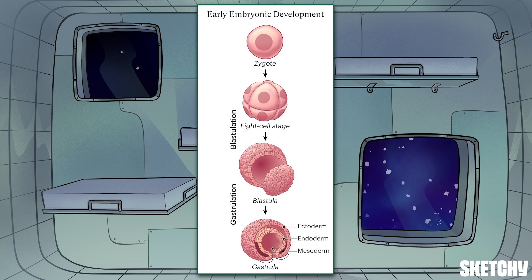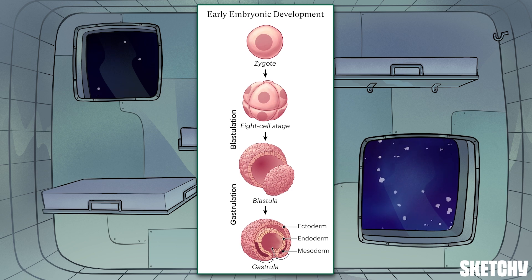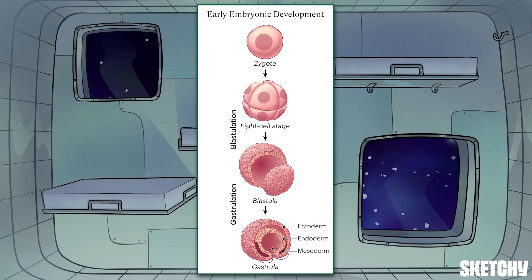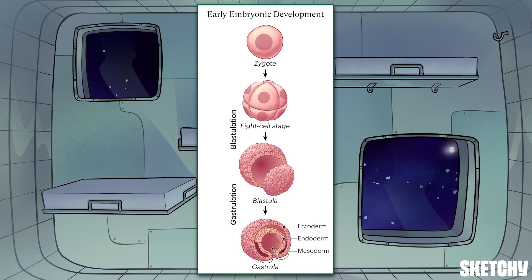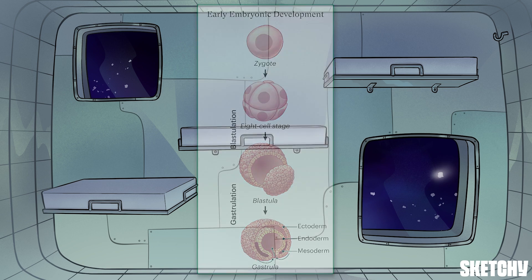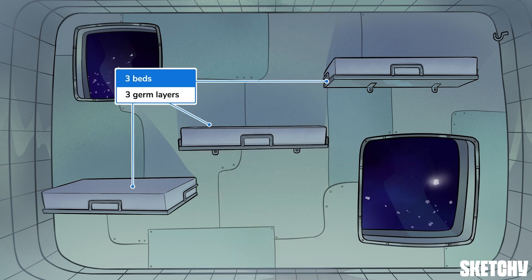During embryonic development, a zygote begins as a single cell, but rapidly starts undergoing mitosis, first becoming a solid multicellular mass, and then hollowing out into a ball called a blastula. Invagination of the blastula draws the outer epithelial cells inward, which marks the start of gastrulation. At this point, the cells in the gastrula start turning into three distinct layers — the endoderm, mesoderm, and ectoderm — which ultimately give rise to all the tissues in the adult body. These three bunk beds represent those three germ layers. Let's check them out one by one.